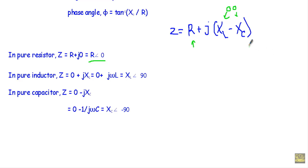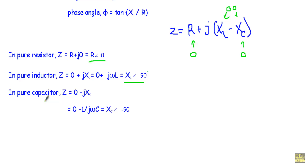In the case of a pure inductor, there is no resistive component and no capacitive reactance, so R equals zero and XC equals zero. Therefore Z equals 0 + jXL, and since XL equals ωL, we get Z equals jωL. In polar form this is XL∠90°.